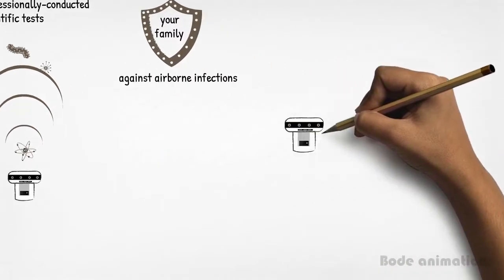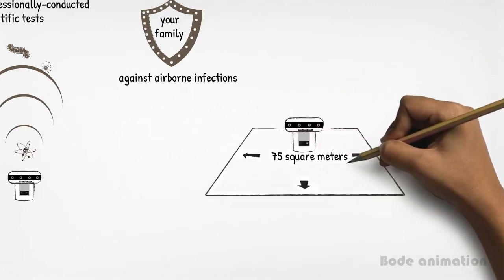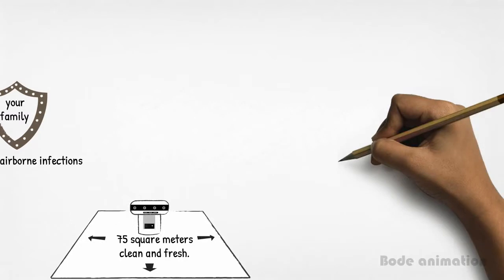As a bonus, the Elanra's impressive air cleaning performance will keep an area of up to 75 square meters clean and fresh.